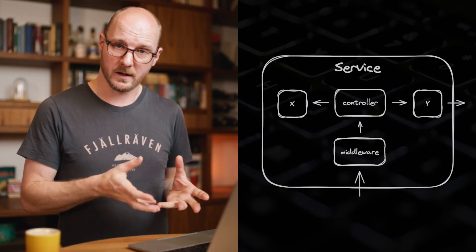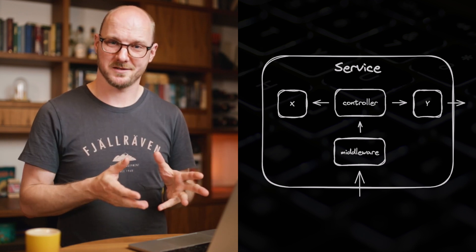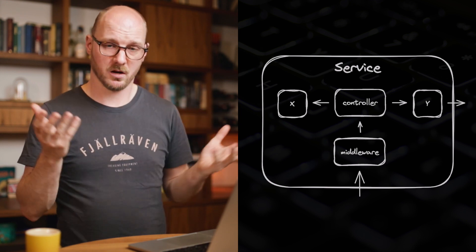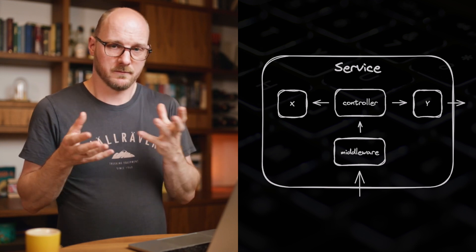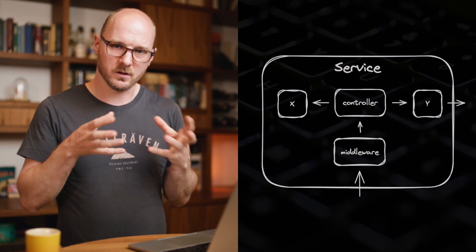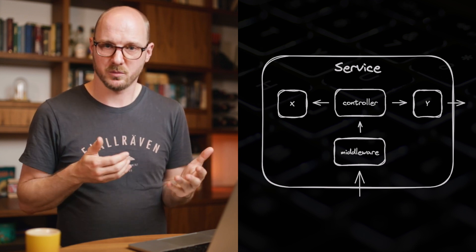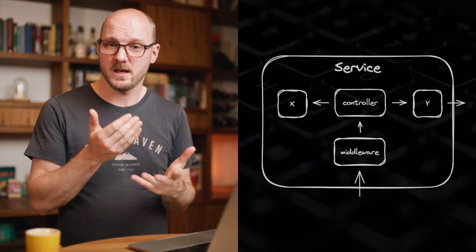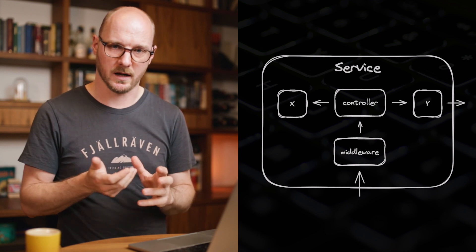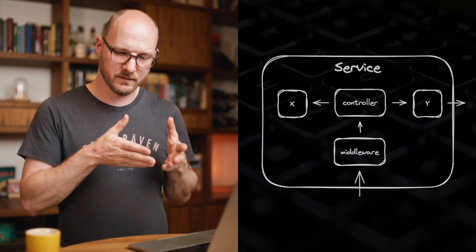And once you start to zoom in, you can use the same approach again. Every large-scale software component consists of sub-components. In the service, there may be a middleware layer, controllers, and other components — usually files like modules or classes contained in folders. Those are the sub-components. When data flows into the service from outside, it always comes via the middleware layer. So let's start there. We follow the data again, and again we focus on the boundaries.